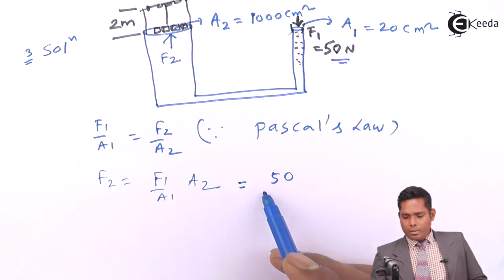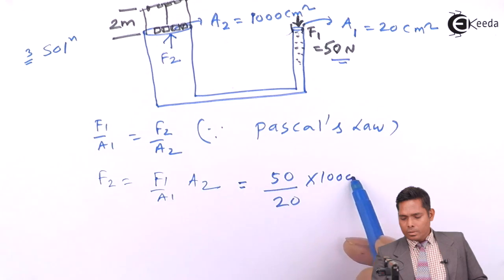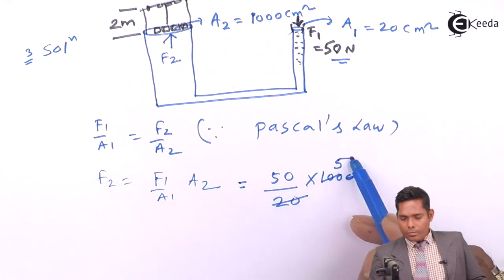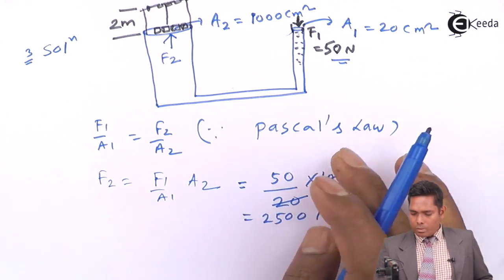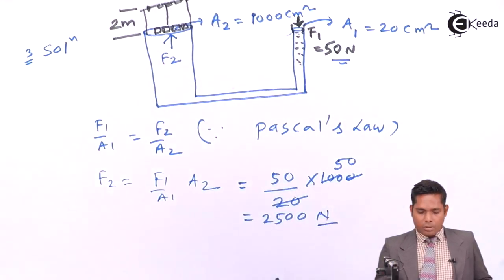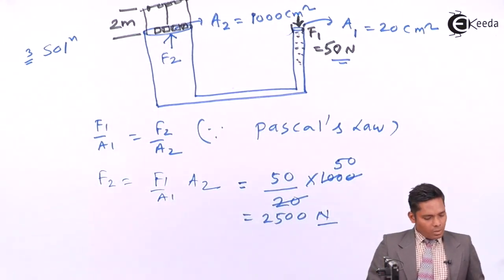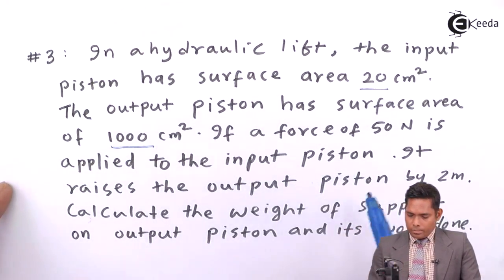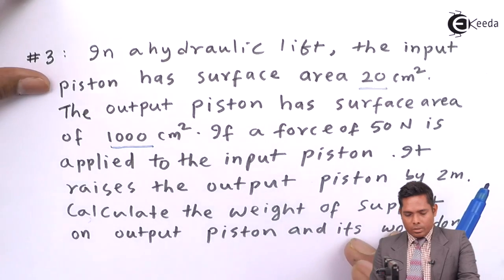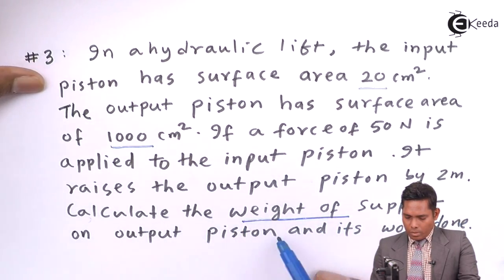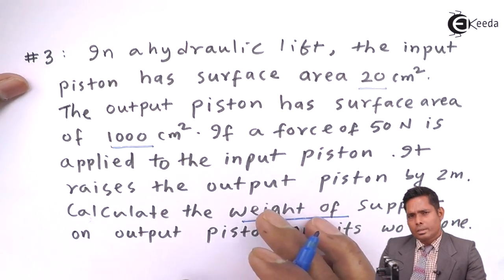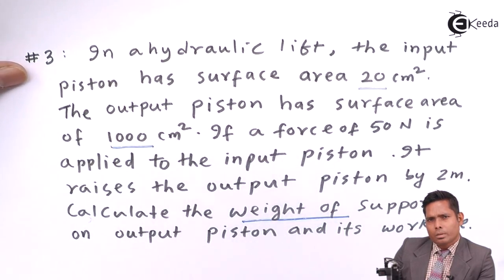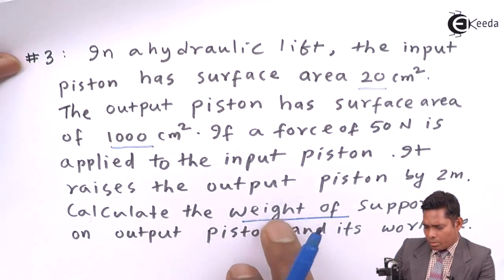F1 is 50 newtons, A1 is 20 centimeters square, and A2 is 1000 centimeters square. Therefore F2 equals 50 times 1000 divided by 20, which gives 2500 newtons. The question also asks to calculate the weight of the support, which is the force F2 equals 2500 newtons, and it moves the output piston by 2 meters.